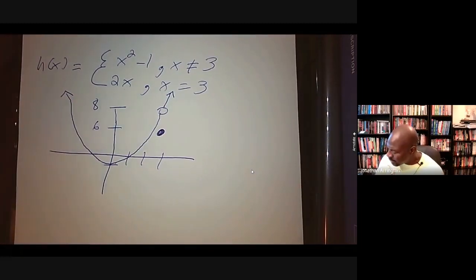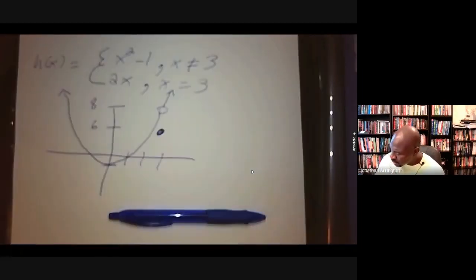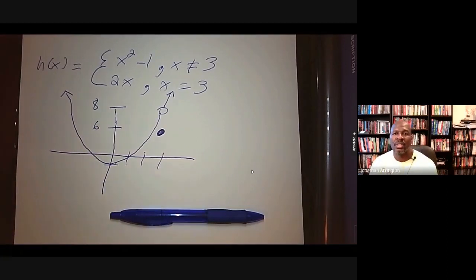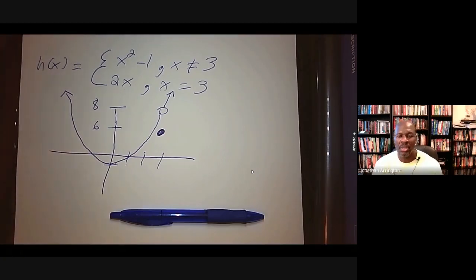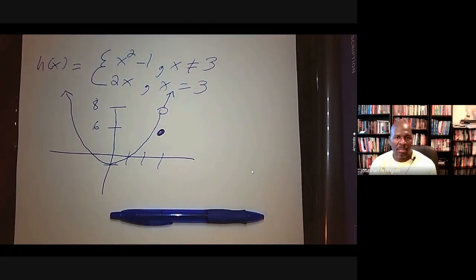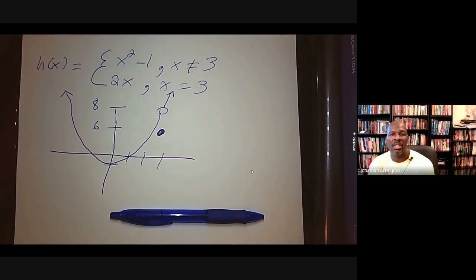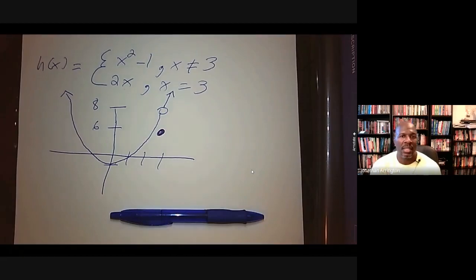We're going to stop there. We looked at the definition of a function — nothing new. We looked at the vertical line test — nothing new. What may have been new was the introduction of piecewise functions. You want to be able to evaluate a piecewise function by choosing the appropriate piece, and you want to be able to graph one. Hoping you can do both of those operations, and like always, we'll see you next time.